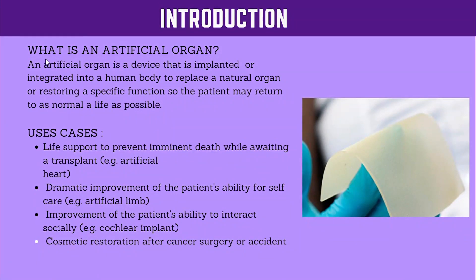So let's see what an artificial organ is. An artificial organ is a device that is implanted or integrated into a human body to replace a natural organ or restoring a specific function so that the patient may return to as normal a life as possible. It's essentially an organ made up of electronic and other materials artificially, to replace almost exactly the same function that an organ performs in our body.